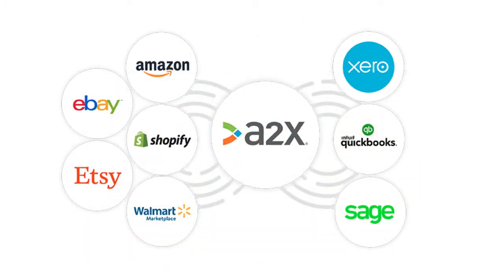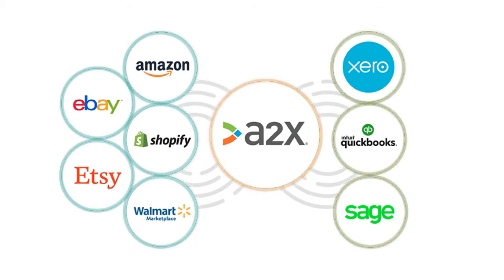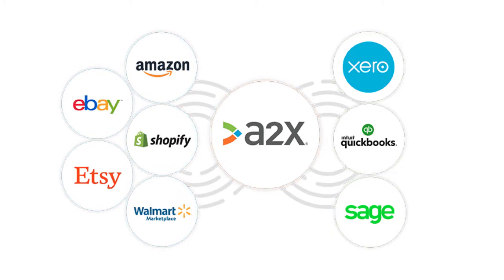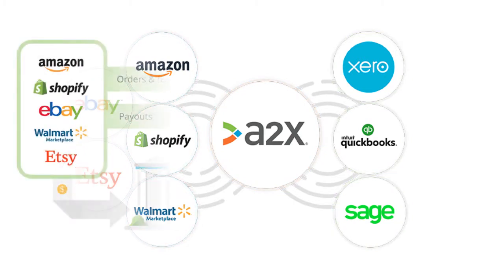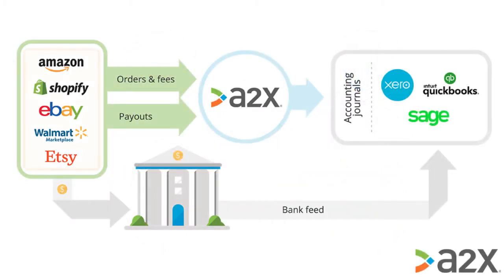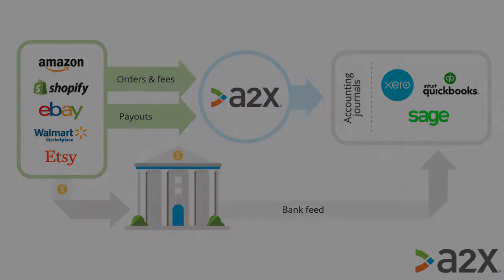So how does A2X work? A2X is an app that sits in between your client's e-commerce sales channels and their accounting system. When you connect A2X to an e-commerce store, it begins to fetch the data into the app from each sales platform. It'll break down the transaction types that make up each deposit and then organizes the sales and fees based on when they occurred. Then A2X will crunch the numbers and generate a summary entry that's ready to post through the accounting software.